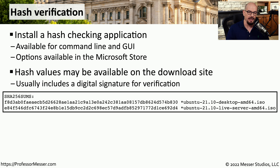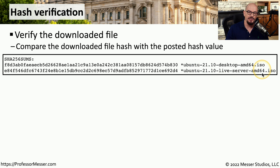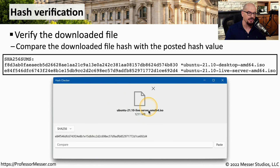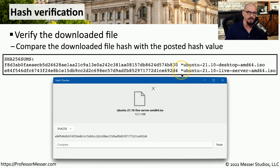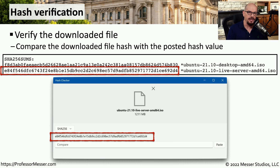I wanted to download the latest distribution of Ubuntu Linux, so I went to the Ubuntu website where I found the ISOs available to download. With those ISOs, I also found SHA-256 sums — the hashes for those ISO files. I downloaded the live server amd64.iso, which has a long hash value. I then ran the hash checker program from the Microsoft Store on that ISO. The SHA-256 shown matched the hash posted on the Ubuntu website, confirming the file on my local machine is exactly the same as the one on the Ubuntu site.